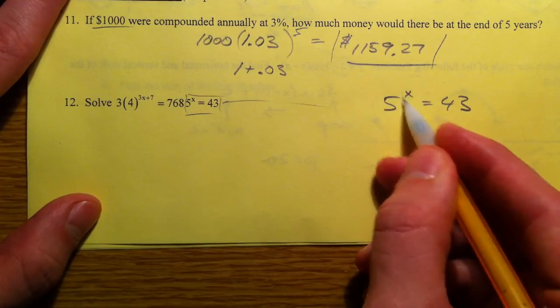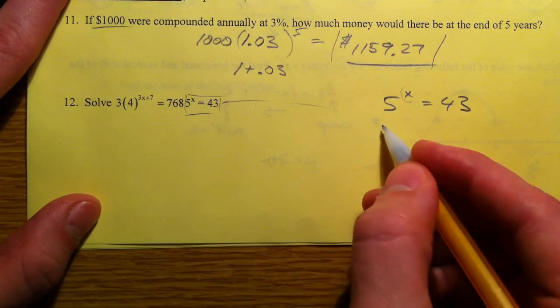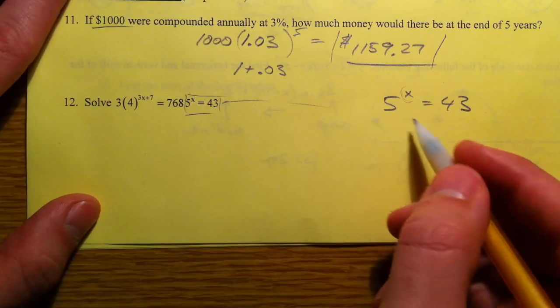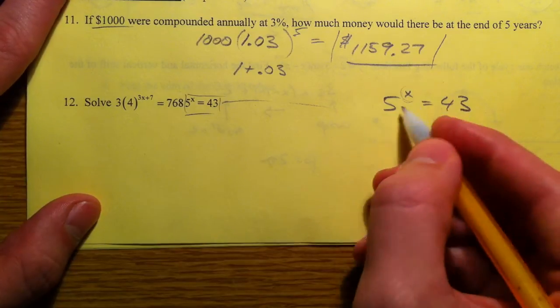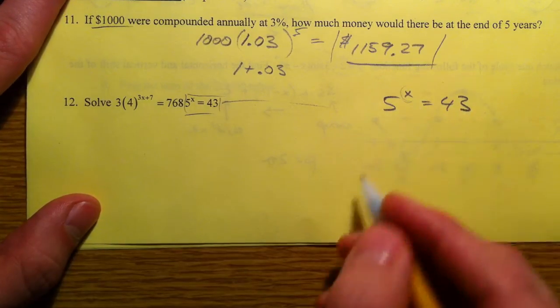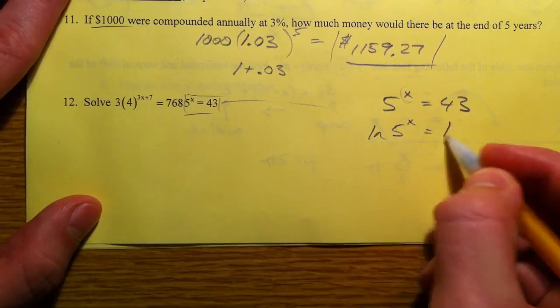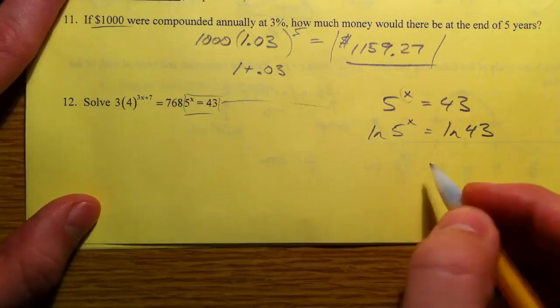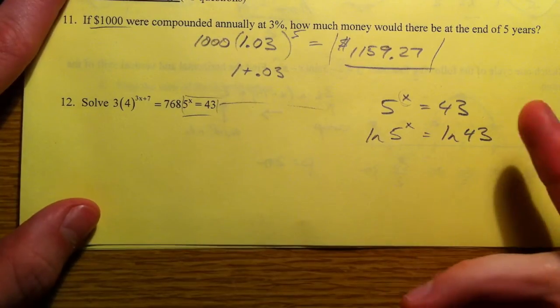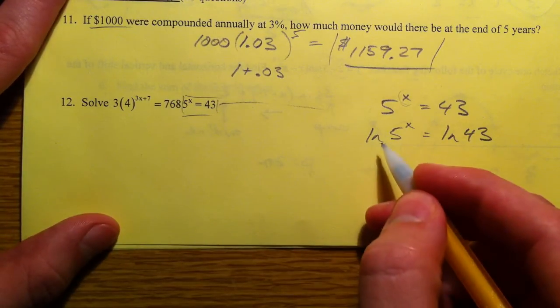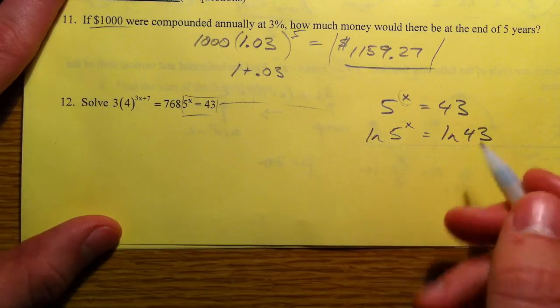If we undo exponents and get that out by itself, we take the log of both sides, because logs are the inverse operations. They undo exponents. So I'm going to take the natural log of 5^x, natural log of 43. And I do natural log simply because it's less letters to write. You could take the common log, the just regular log, L-O-G.